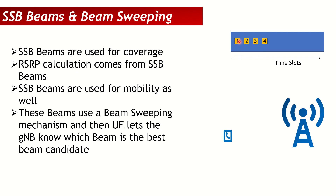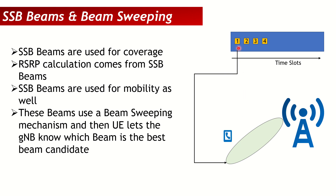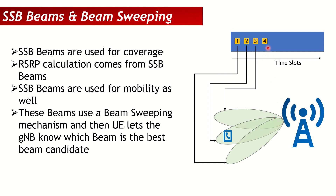The gNodeB sends the first SSB over one beam, then the second SSB on a different beam, the third on another, and the fourth on yet another beam. Each SSB moves in a clockwise direction, effectively sweeping the whole cell. This is why we call it beam sweeping — we are sweeping the entire cell.